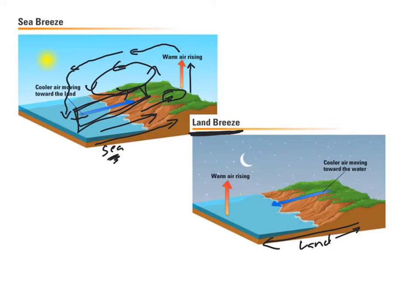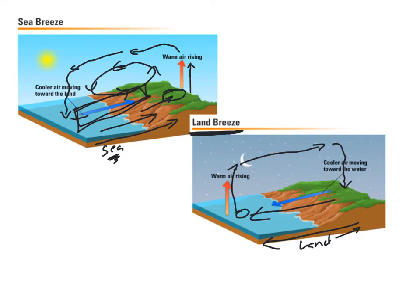At night the opposite happens. Water temperature stays relatively warm, so air above the water feels warmer — that's where we see rising air at night. It spreads out, cools off, and since the land is cooler it cools the air above it, causing that air to blow down and spread out, filling the gap by blowing from the land to the ocean. That creates our land breeze — the cycle runs in the opposite direction from a sea breeze.